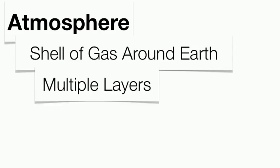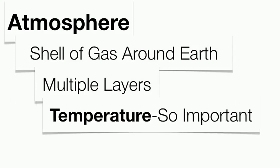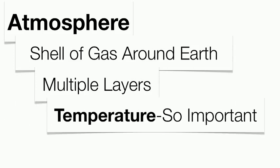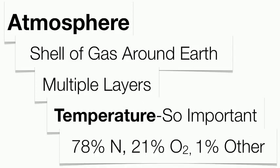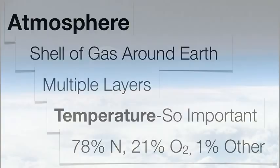Our atmosphere is broken up into multiple layers, and we'll talk about the four basic layers of the atmosphere. We'll also focus on the fact that temperature is an extremely important concept when going from one layer to the next. Notice the composition is very different from the early atmosphere 2 billion years ago.